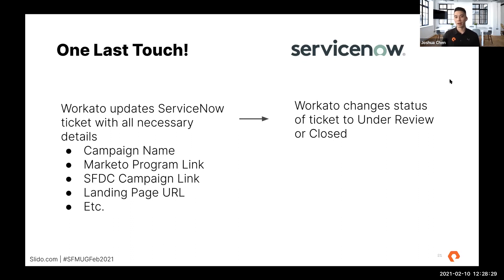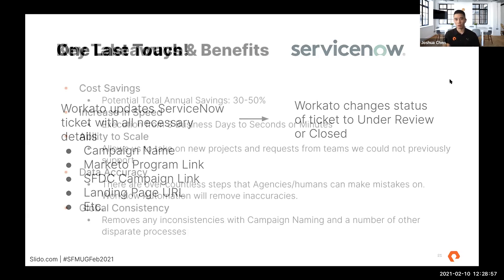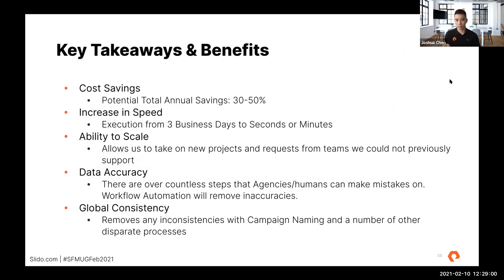That is the full recipe as of right now. This takes roughly 60 to 90 minutes by our agents, depending on the person, and we get at least 1,000 of these per year. Cost savings: obviously if you're automating half of your tickets, you can really save a ton of money. For us, that's in the hundreds of thousands of agency costs.